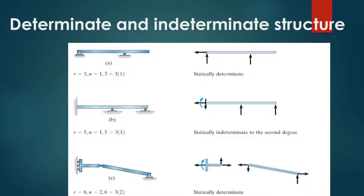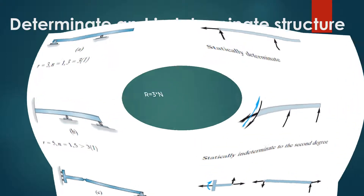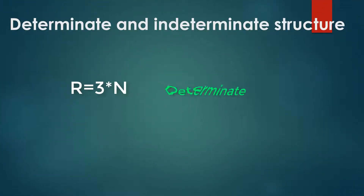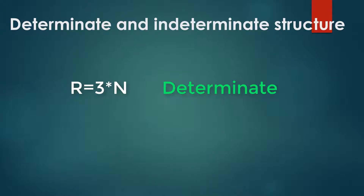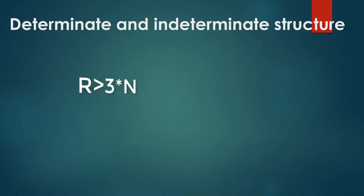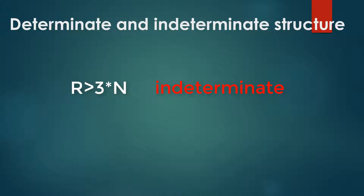For coplanar structures, we have three equilibrium equations. If n is the total number of parts and r is the number of unknown forces and moment components, then: if r equals 3 times n, the structure is determinate; and if r is greater than 3 times n, the structure is indeterminate.